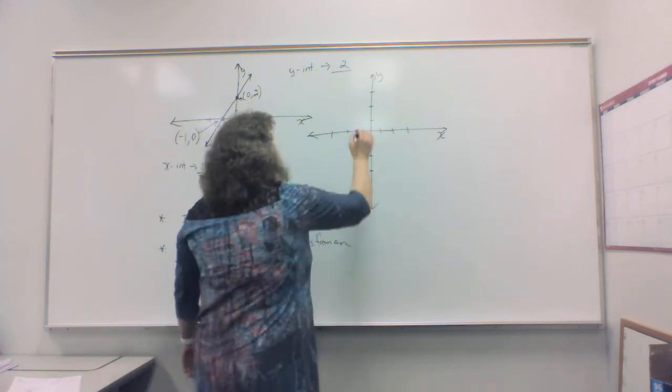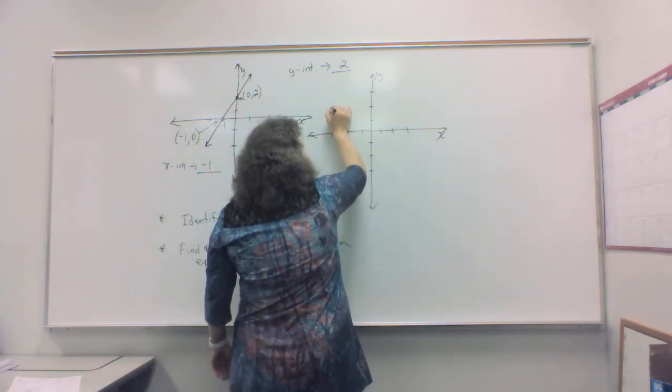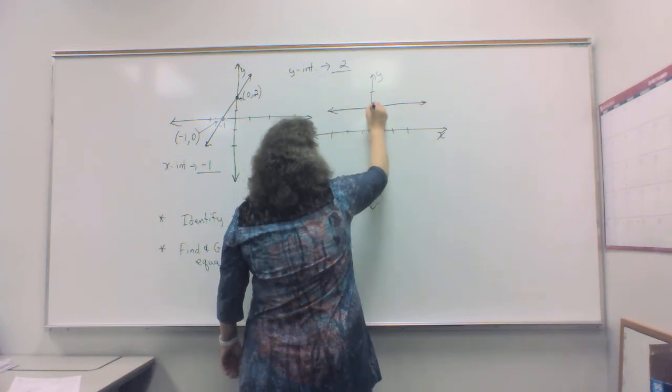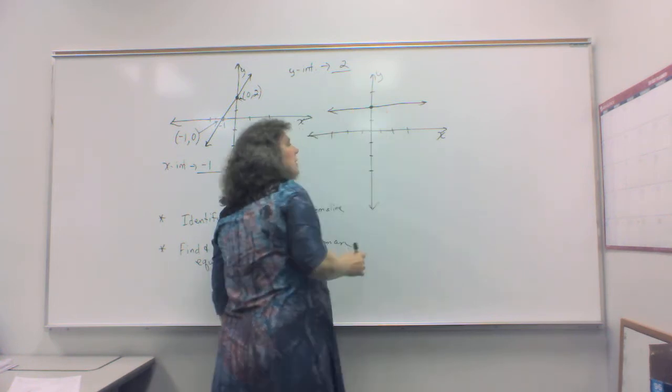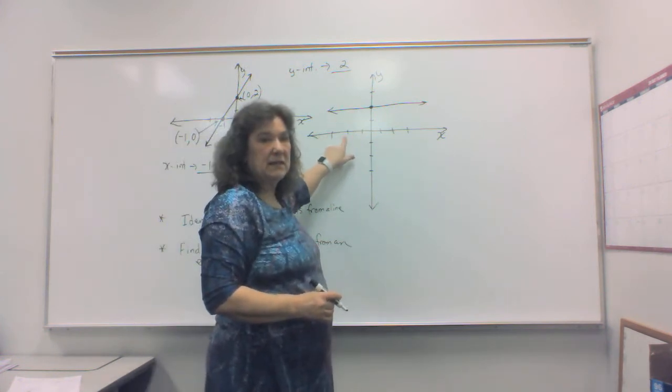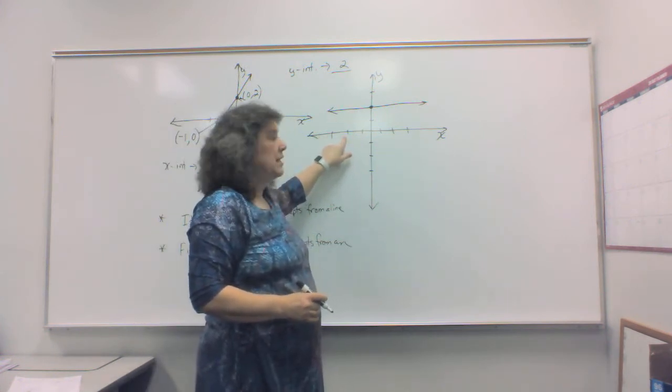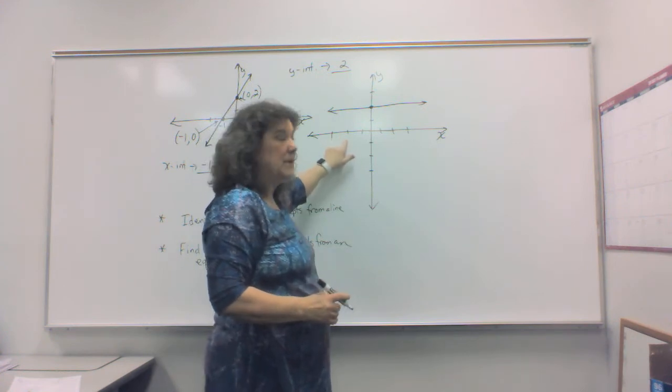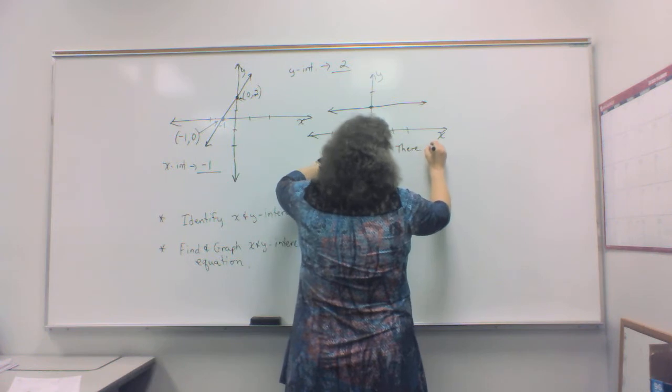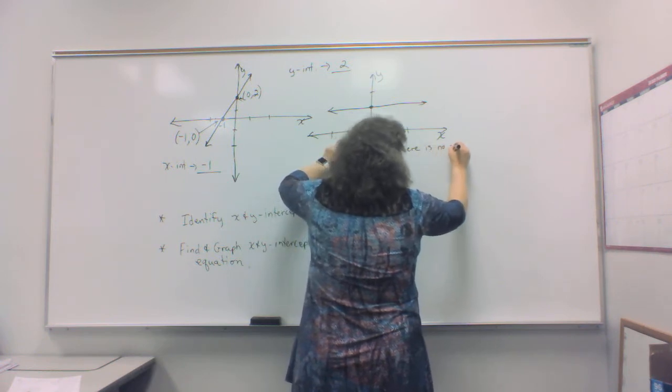So now let's draw a line right here. Now, does this line cross my x-axis? No, it doesn't. And because it does not cross my x-axis, there is no x-intercept.